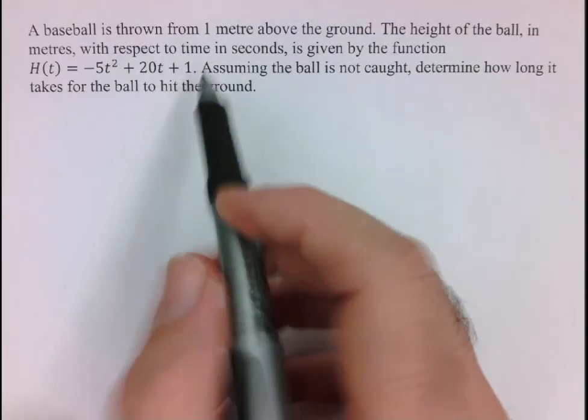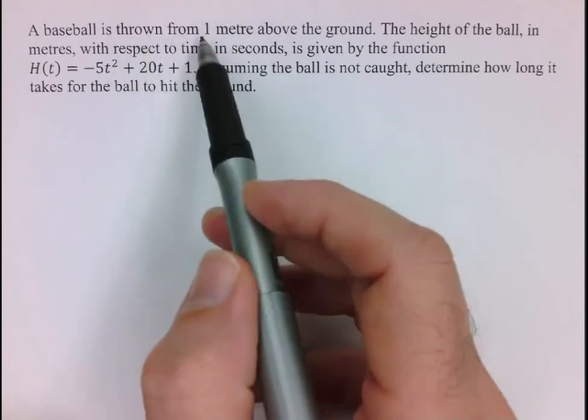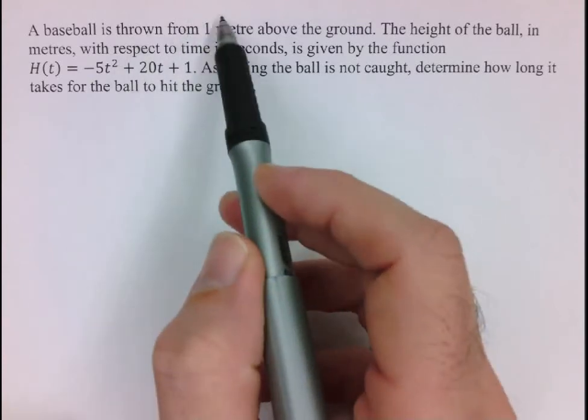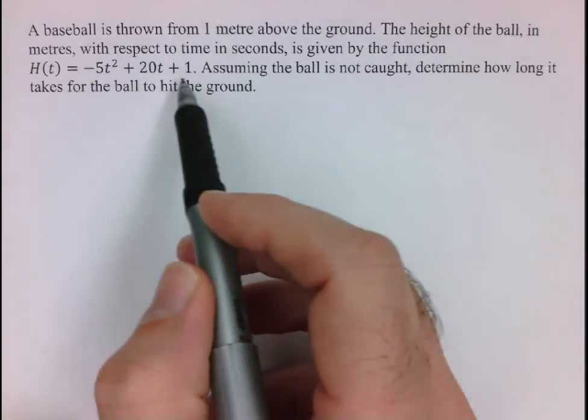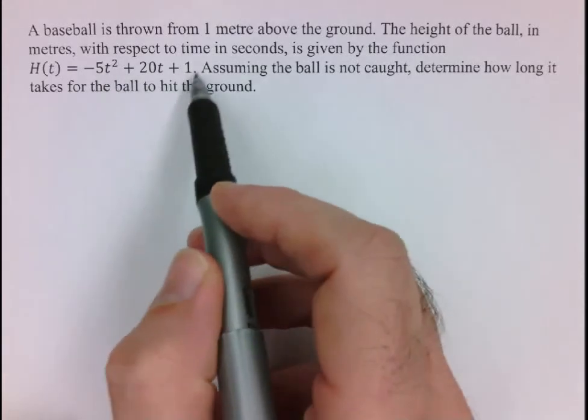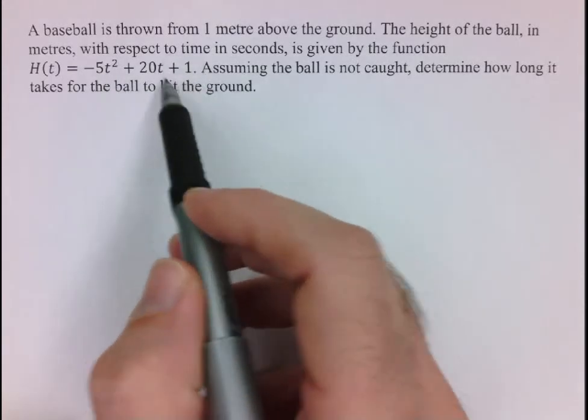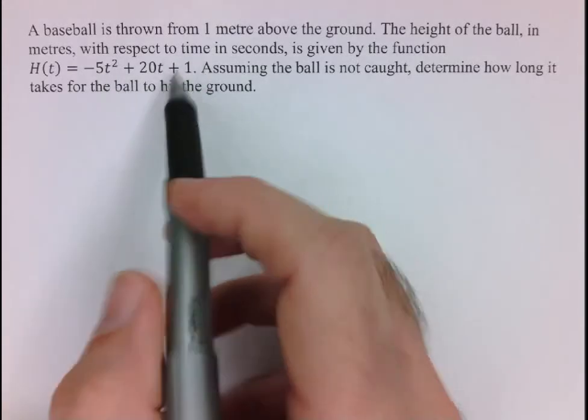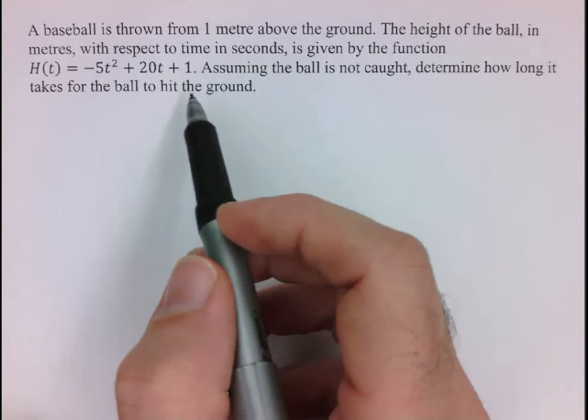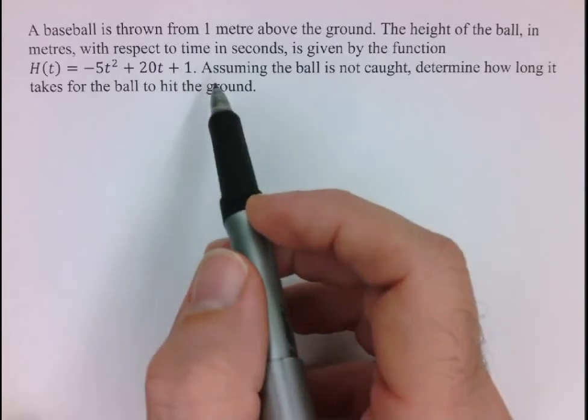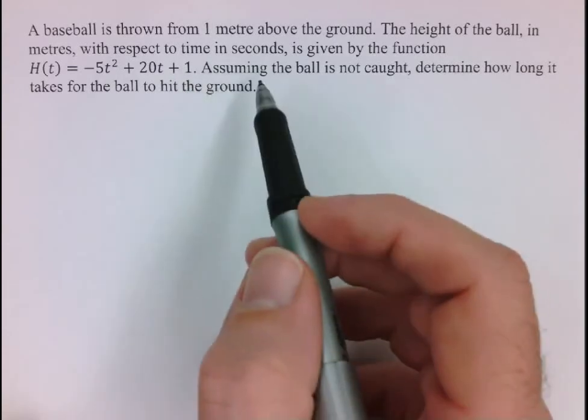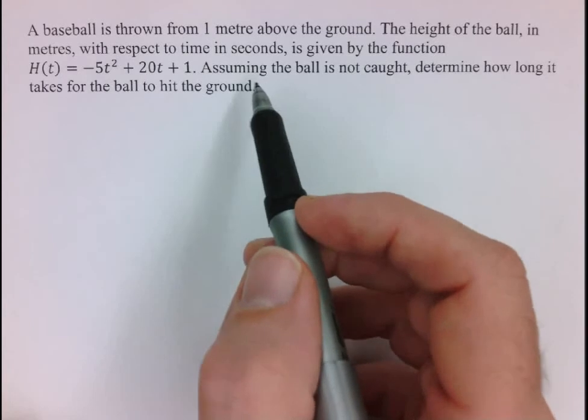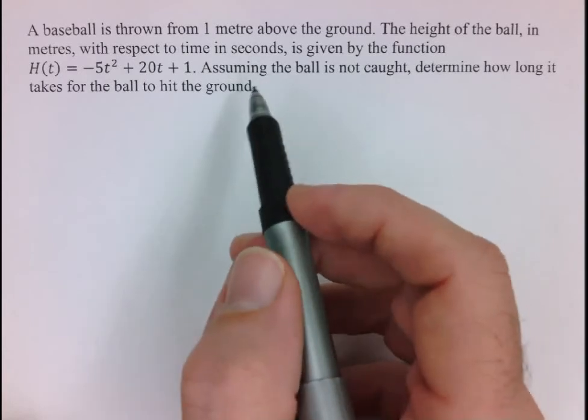Okay, so a couple things I want to say. First of all it makes sense that the ball is thrown from one meter above the ground, because if we look at this equation which is in standard form, we see that the c value, which is the y-intercept, is equal to one. Secondly, I notice that this question here does not talk at all about maximums or minimums or largest or smallest values, so we should know right off the bat that we're not going to be completing the square.